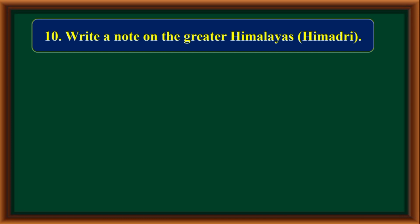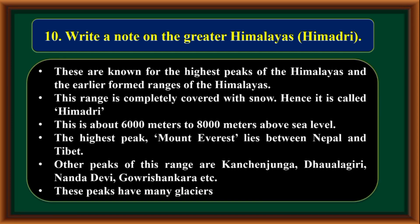Write a note on the Greater Himalayas or Himadri. These are known for the highest peaks of the Himalayas and are the earliest-formed ranges. This range is completely covered with snow, hence called Himadri. It is about 6,000 to 8,000 meters above sea level.